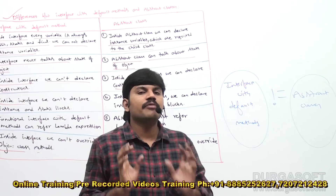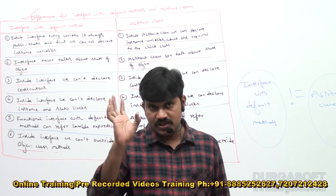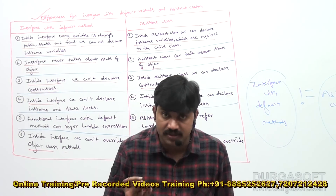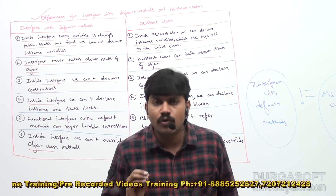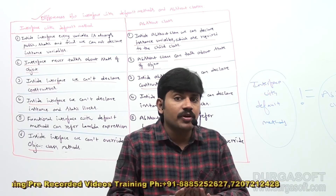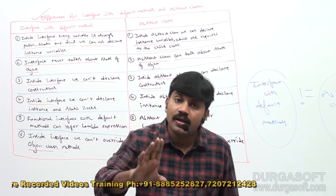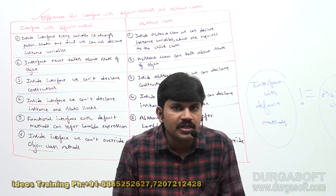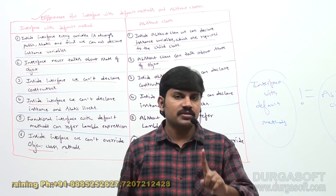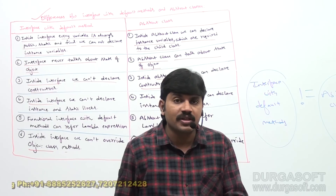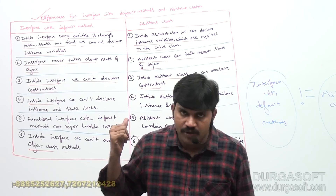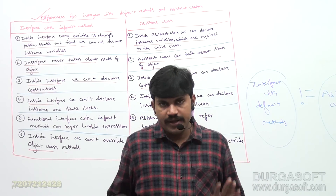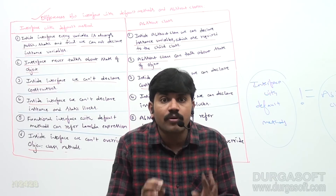That's all. These are the important points about default methods: what a default method is, how to declare it, how to use it in the implementation class, whether you can override Object class methods as default methods (not possible), the ambiguity problem when two interfaces contain a default method with the same signature and how to solve it, and the differences between interface with default methods and abstract class. That's the complete story about default methods.